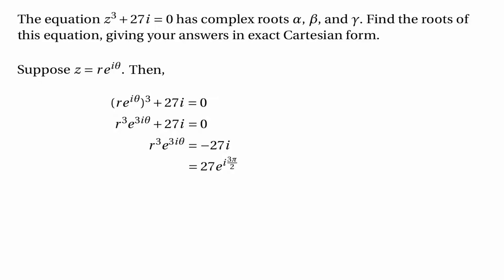If you compare the two sides of this equation, it becomes obvious that r cubed must be 27, and 3θ must be 3π over 2, or 3π over 2 plus a multiple of 2π. Because remember, if you add a multiple of 2π to the argument of a complex number, it makes no difference — you've still got the same complex number. So 3θ could be 3π over 2, or 7π over 2, or 11π over 2, and so on.